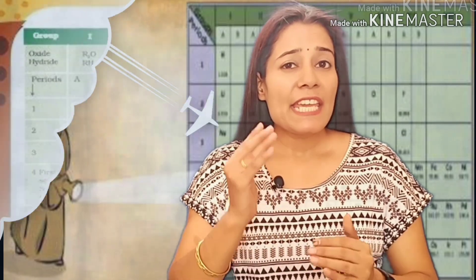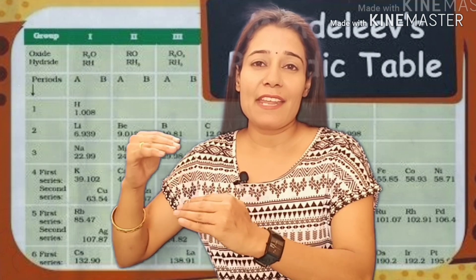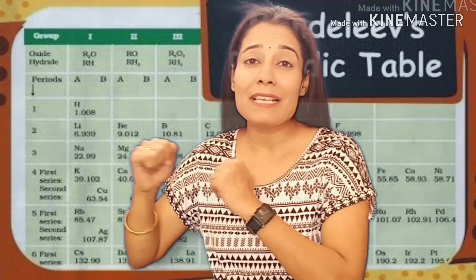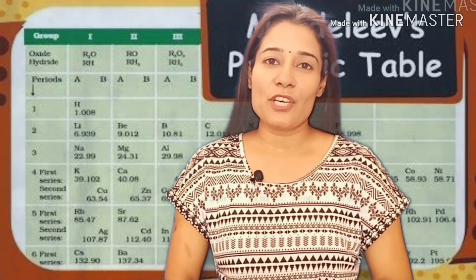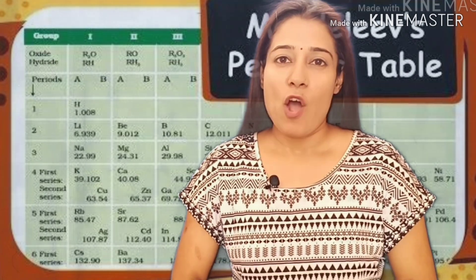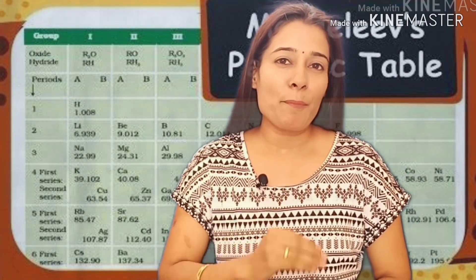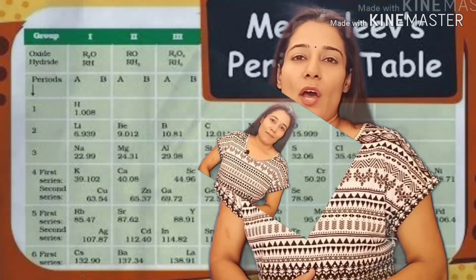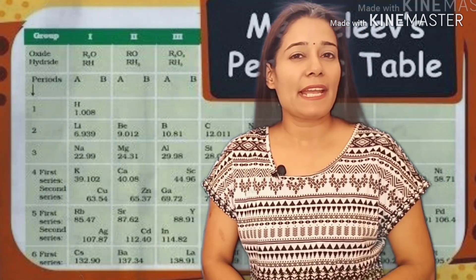He then took 63 cards and on each card he wrote down the properties of each element. After then, he sorted out the elements with similar properties and pinned them together on the wall. He observed that the elements with similar properties were arranged in their increasing order of atomic masses. Similarly, he observed that there was recurrence of their physical and chemical properties.